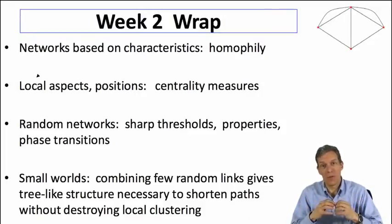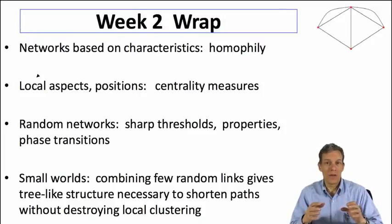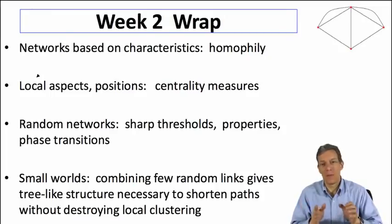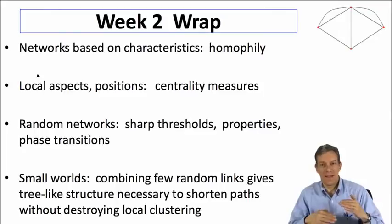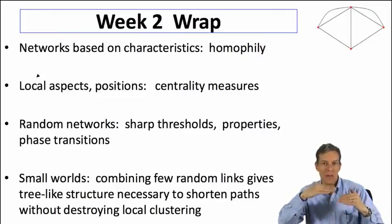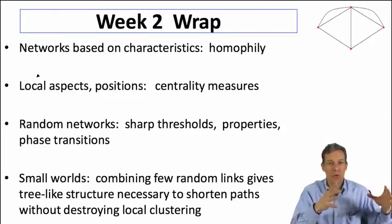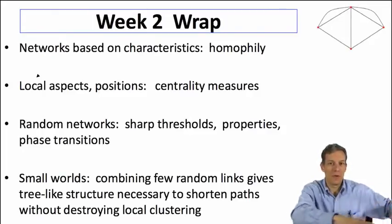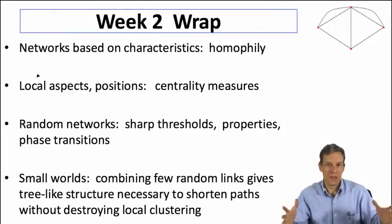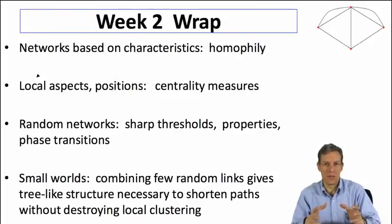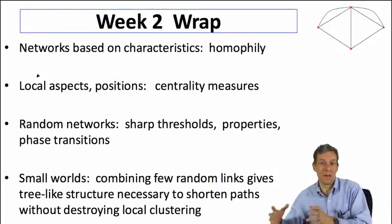Then we started looking at random networks in a little more detail. When we look at things like Erdős–Rényi random networks and a series of other networks, there are going to tend to be sharp thresholds. A very important idea here is that if you change the link probability slightly, you can go from a setting where networks are rather disconnected to situations where suddenly they start to coalesce and then become path-connected quite quickly.